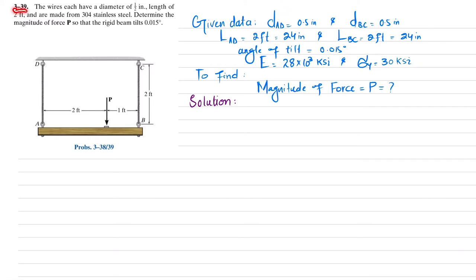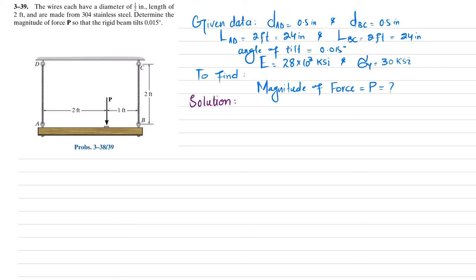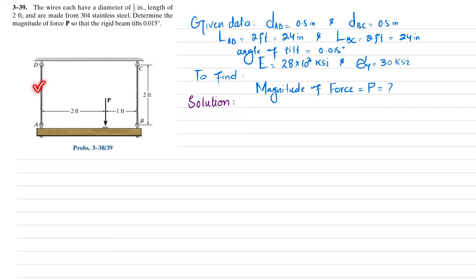Welcome back, problem 3.39. The statement is: wires each having diameter of half inch and length of 2 feet are made up of 304 stainless steel. Determine the magnitude of force P so that the rigid beam tilts 0.015 degrees. You can see this is beam AB, supported by wire AD and wire BC, each of length 2 feet and diameter half inch.